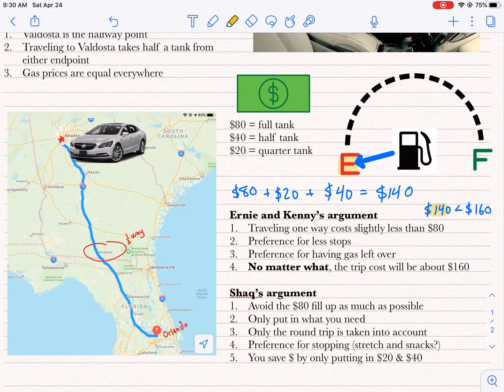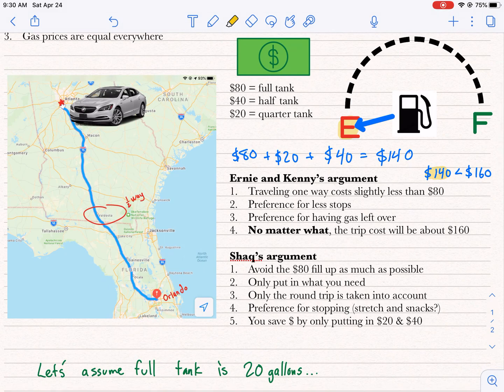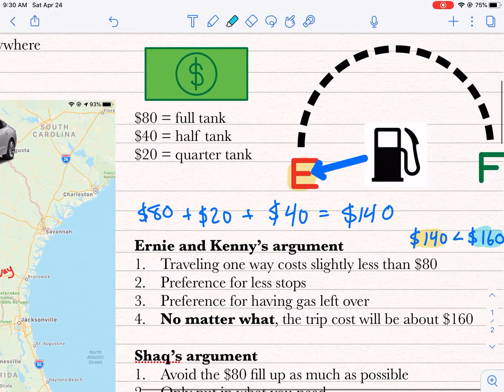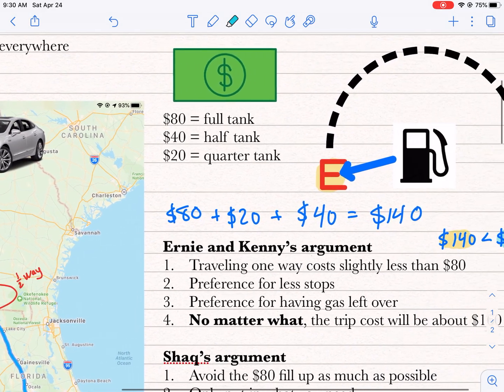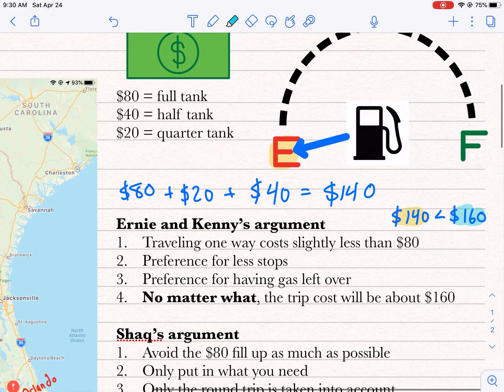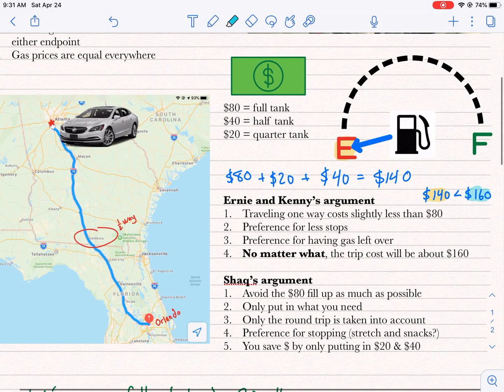Now, I think Shaq was saying it doesn't take a full tank. I'm guessing he says it takes somewhere around three quarters of a tank. And Ernie and Kenny are just being overly cautious by spending $160. Now, their point is even if you get back to Atlanta and you only spent the $140, you're going to be on empty and you're going to have to fill up eventually to go about your normal day-to-day business. I'm not sure Shaq directly addressed that issue. So I think that's the main argument there.